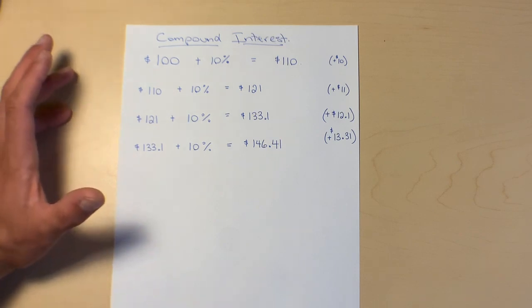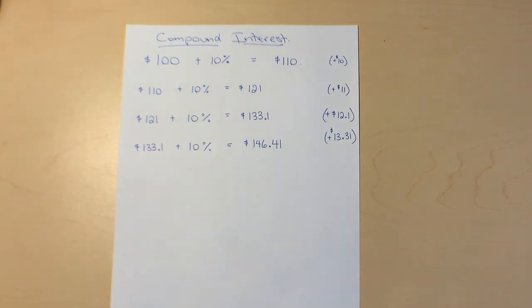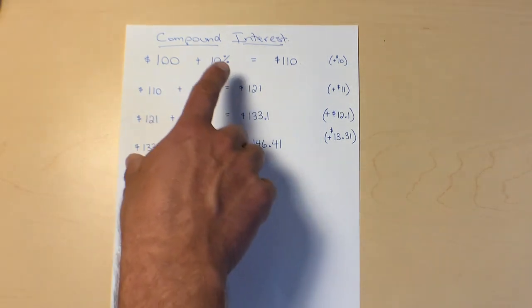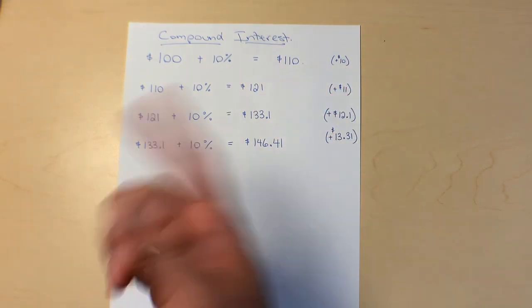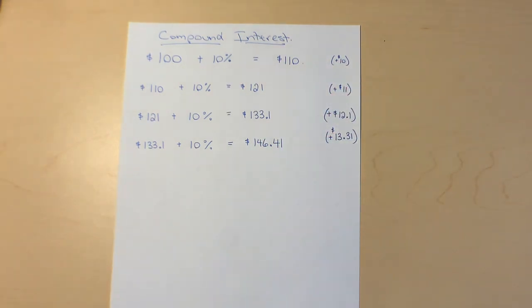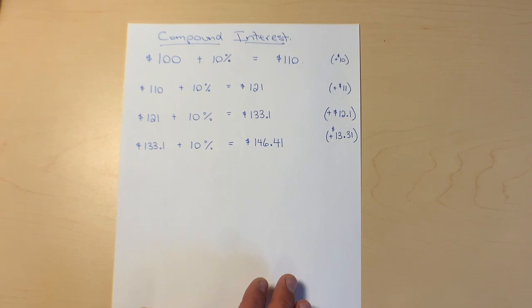So as we can see here, the more compounds we have, the more chances our interest will grow at a faster rate. So credit cards they have daily compounds. Now that's compound interest we don't like because we've got to pay that. But if we're earning interest we like lots of compounds. If we're paying interest we want very few compounds.